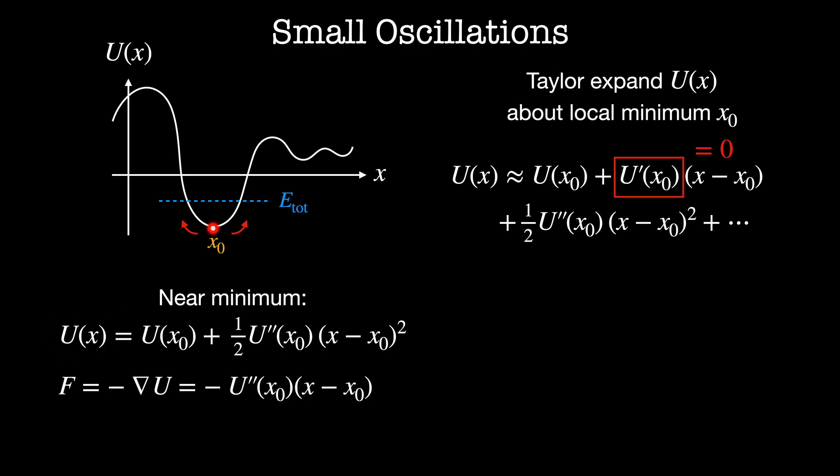And that force is going to be -U''(x₀)(x - x₀). This is equal to mass times the acceleration of the particle. This is really just the equation for the simple harmonic oscillator. The force is proportional to the distance away from x₀ that it has moved.